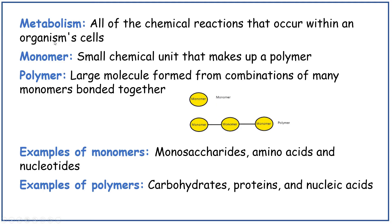Some definitions now. Metabolism is all of the chemical reactions that occur within an organism's cells. A monomer is a small chemical unit that makes up a polymer. A polymer is a large molecule formed from combinations of many monomers bonded together. Examples of monomers in biology are monosaccharides such as glucose, amino acids and nucleotides. Examples of polymers in biology are carbohydrates, proteins and nucleic acids like DNA.